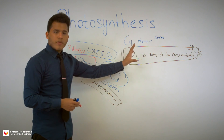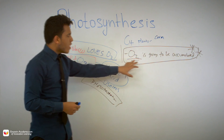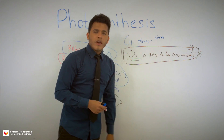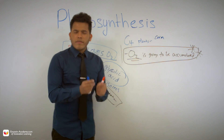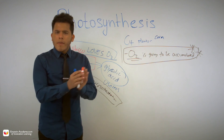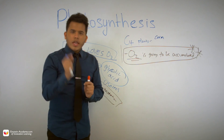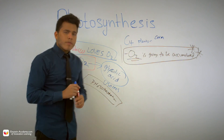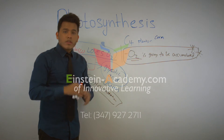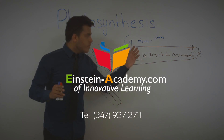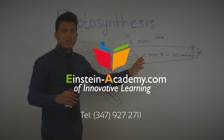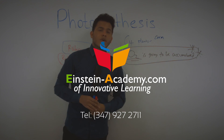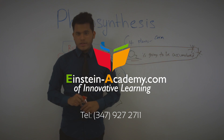Because C4 plants accumulate oxygen, they must modify their pathway into the Calvin cycle. In the next video, we'll talk about this modification for C4 plants and then discuss another pathway called CAM plants.